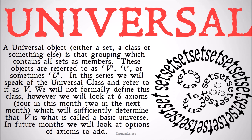A universal object — whether a set, a class, or something else — is that grouping which contains all sets as members. These objects are referred to as capital V, or sometimes a capital U. In this series we're going to refer to the universal class as V. We're not going to formally define this class; instead we will look at six axioms for this month and two in the next month, which will sufficiently determine that V is what we call a basic universe.